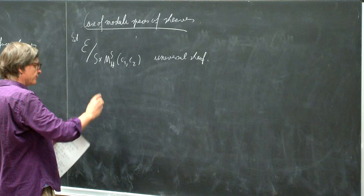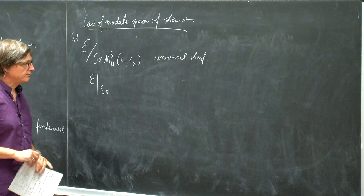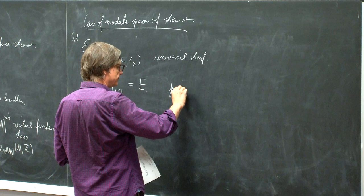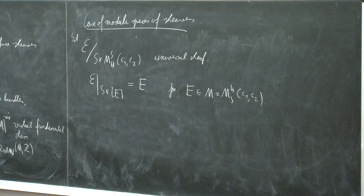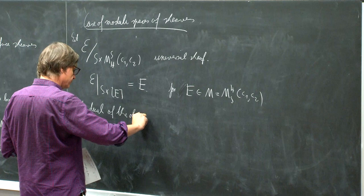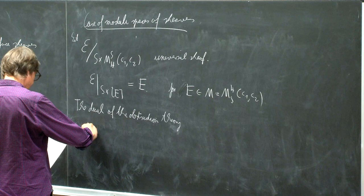If we restrict the universal sheaf to S times the sheaf parametrized, this will just be the sheaf parametrized. So E|_M is the universal sheaf. The dual of the obstruction theory can be written as an element in the derived category.